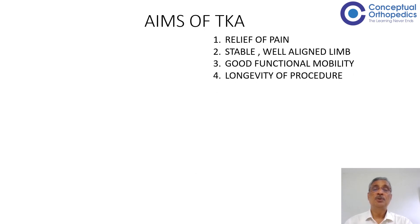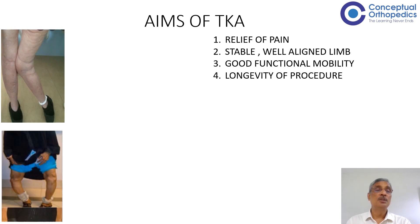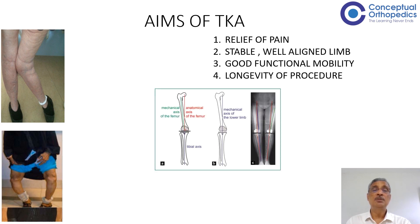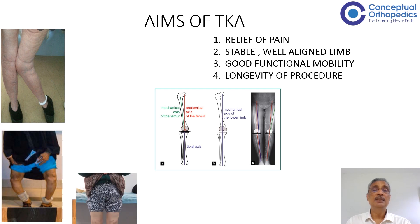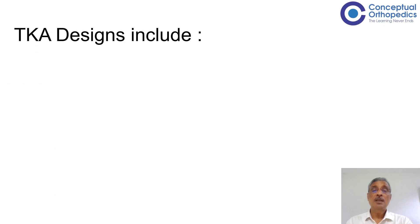Coming to the aims of total knee arthroplasty: one is the relief of pain, second is to achieve a stable and well-aligned limb, and more importantly to achieve good functional mobility for the patient. Longevity of the procedure and durability of the components is also one of the major aims. So a severely deformed knee — either a varus or valgus — the aim is to restore the normal mechanics of the knee and ultimately have a straight limb on which the patient can walk comfortably with a good functional outcome.